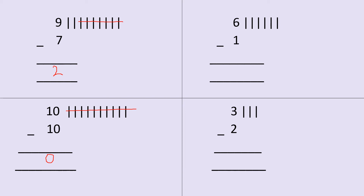Now let's come to the next one. Here it is six minus one. Since six is on top, I have made six lines. Out of six lines, how many lines do I need to cut? One line. When we cut this one line, we are left with five lines. So my answer will be five.